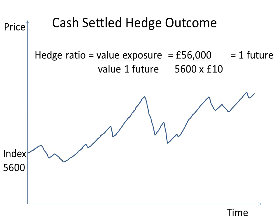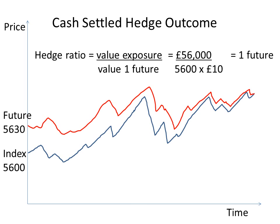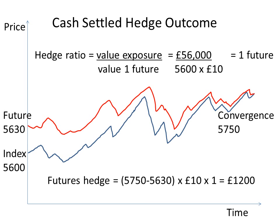We look into the futures market today knowing that futures prices will eventually track and converge with the underlying asset price — as we saw in previous presentations covering cost of carry and arbitrage. Today the futures price is trading at 5630. Suppose that over time the final futures price, which settles against the FTSE 100 index on its last trading day, is 5750. Buying futures at 5630 and settling at 5750 is a difference of 120 index points. Each index point is worth £10 and we traded one futures contract, so the benefit to us — the hedger — is £1,200.